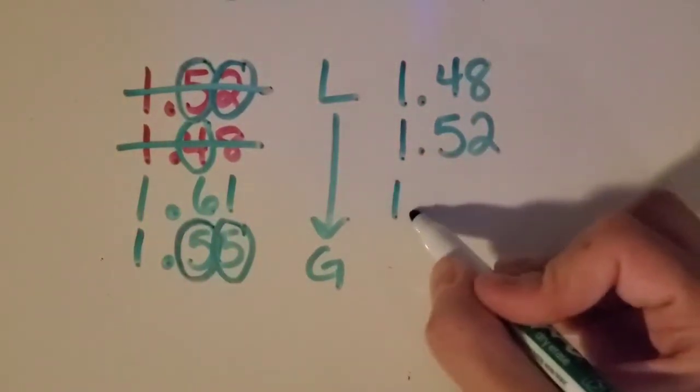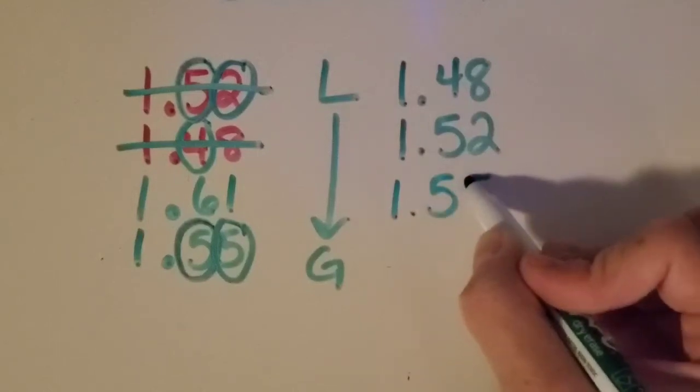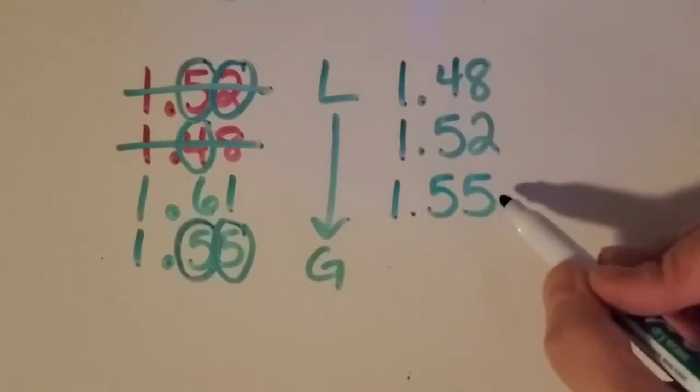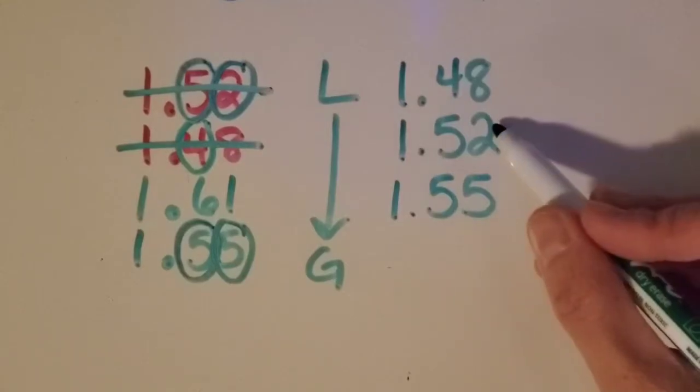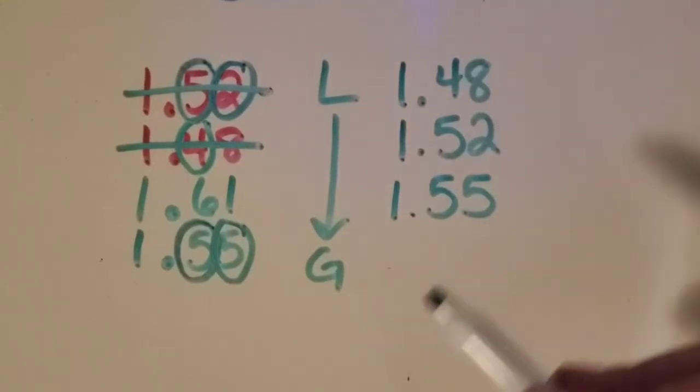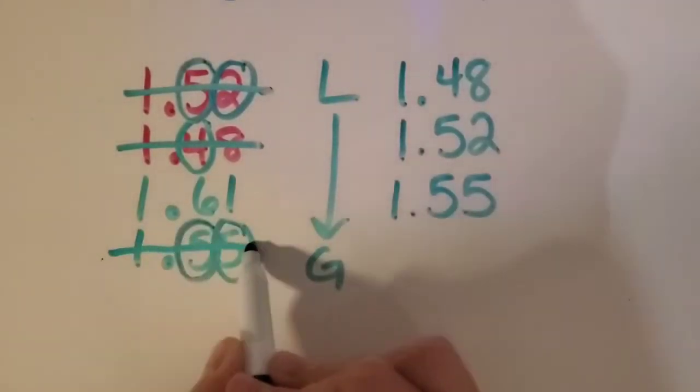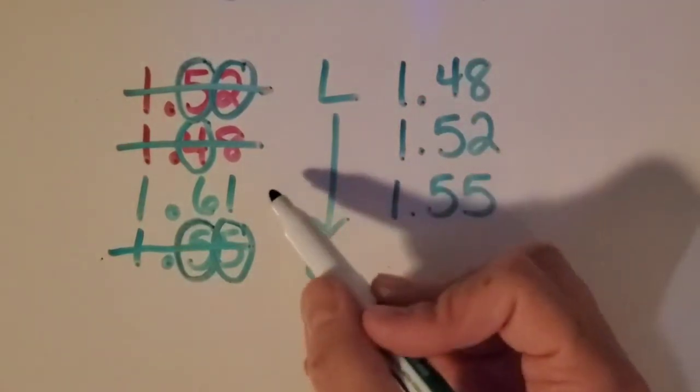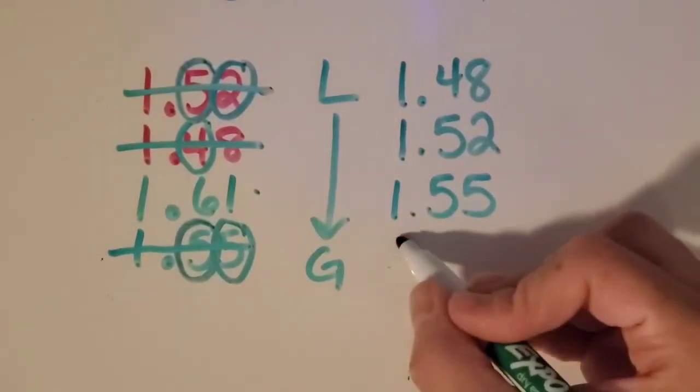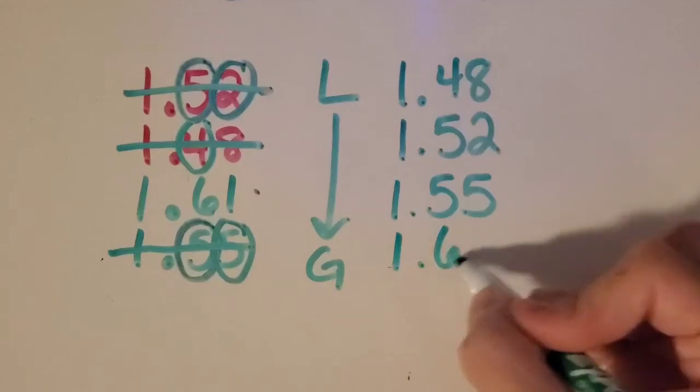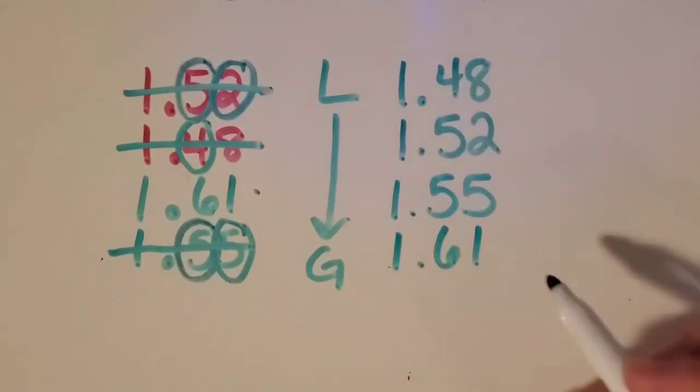Okay, and then I'm going to use my other one, which makes sense because 55 hundredths sounds bigger than 52 hundredths, so that makes sense. Cross it out, and then I'm just left with the one last number, so I know it goes last. And 61 hundredths is definitely bigger than 55, so I have it in the right order.